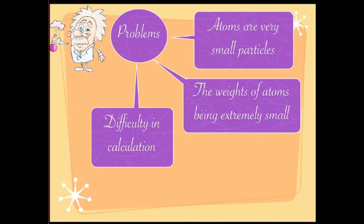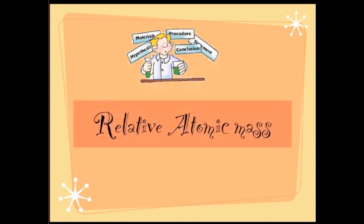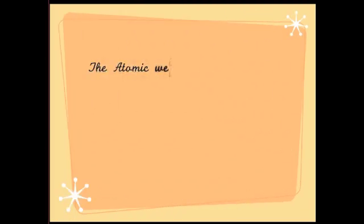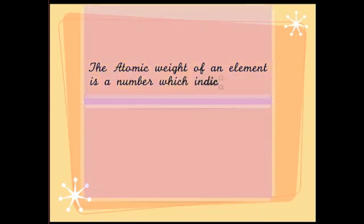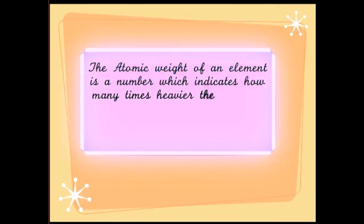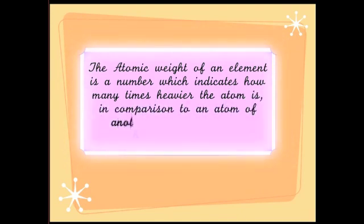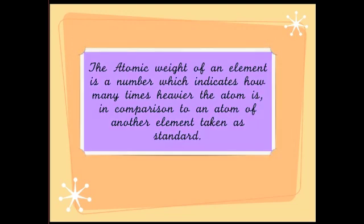After some time, scientists came up with an idea of measuring the relative atomic mass instead of the actual atomic mass — that is, atomic mass relative to a standard. The definition is: the atomic weight or mass of an element is a number which indicates how many times heavier the atom is in comparison to an atom of another element taken as standard.